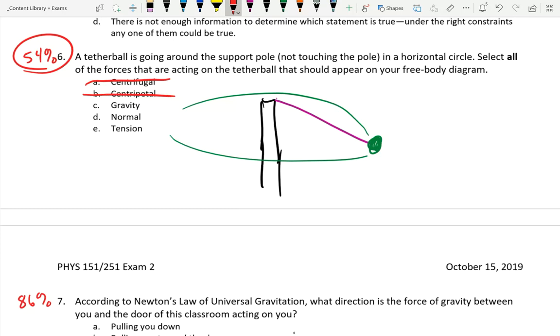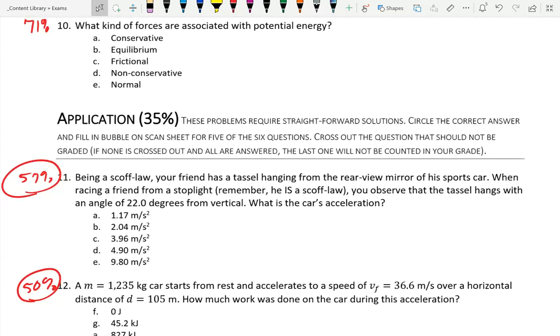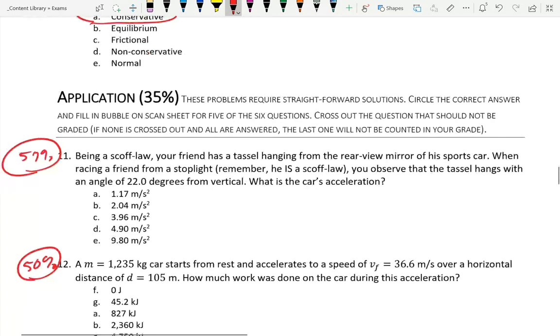Gravity? Yes, force of gravity. Normal? No, because it's not against a surface. Tension? Absolutely. What direction is the tension going to pull it? Parallel to the cord going away from the pole. It's always the rule. No problem with the next questions, but there was a little problem with potential energy is only associated with conservative forces.